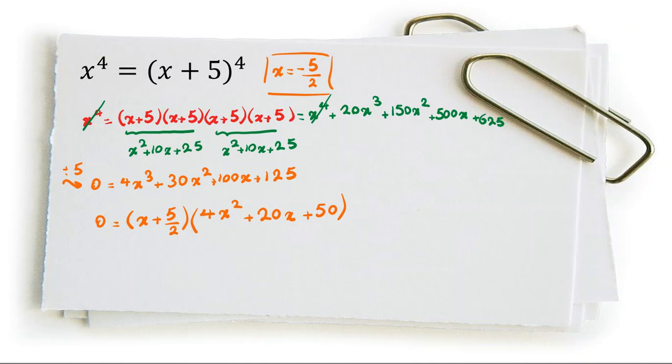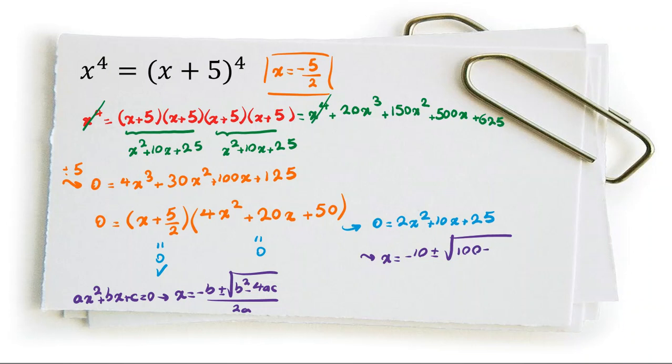Either the first term is 0, giving x equals negative 5 over 2, or the second term is 0. Dividing by 2: 2x squared plus 10x plus 25 equals 0. Using the quadratic formula, x equals negative b plus or minus square root of (b squared minus 4ac) over 2a. This gives x equals negative 10 plus or minus square root of (100 minus 200) over 4. In real numbers we don't have an answer, but defining i as square root of negative 1, it becomes negative 10 plus or minus 10i over 4, or negative 5 plus or minus 5i over 2.